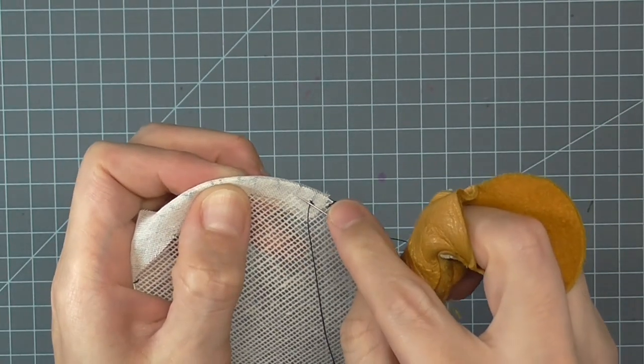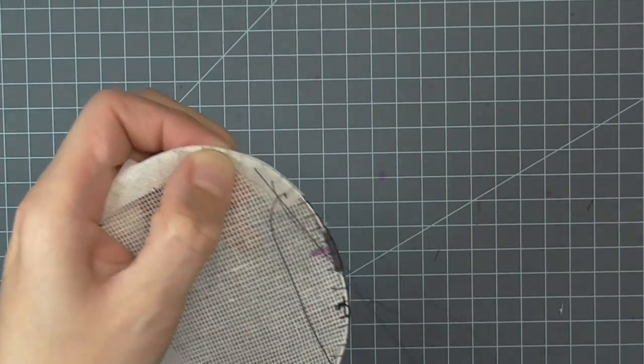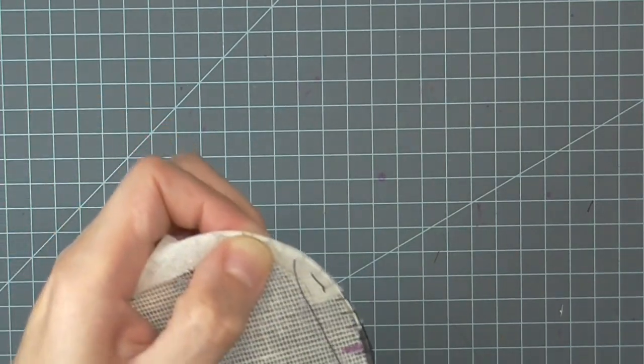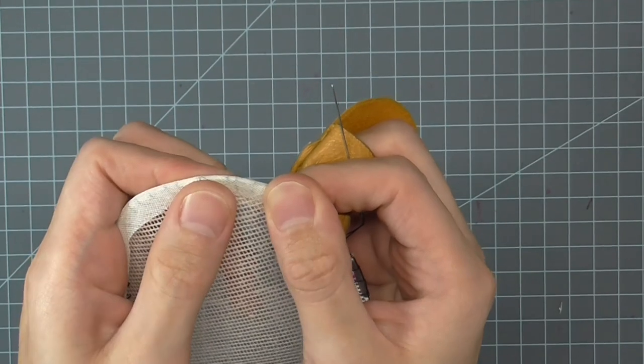On some mass-produced hats, this step is completely omitted. There are going to be instances where you do not have to cover your wired edge with crinoline. Typically, they involve very thick fabrics.